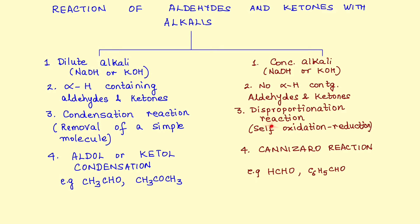You have two categories here: the reaction of aldehydes and ketones with dilute alkalis — we are going to take simple NaOH or KOH — or concentrated alkali, again NaOH or KOH. The first set of reactions, known as aldol or ketol condensation, takes place with aldehydes and ketones containing an alpha hydrogen atom. The second set of reactions, known as the Cannizzaro reaction, is shown by aldehydes and ketones having no alpha hydrogen atom.